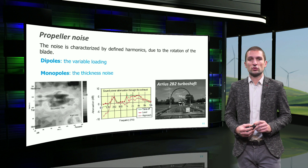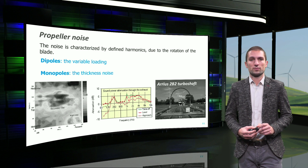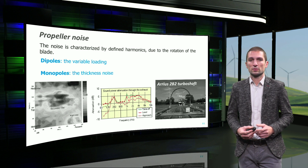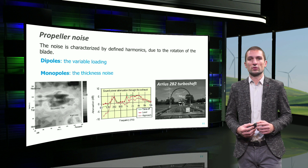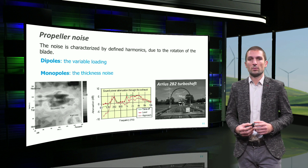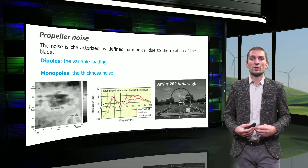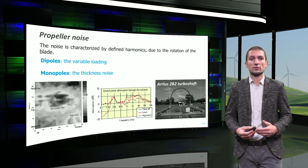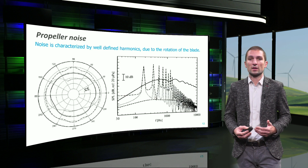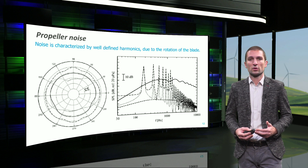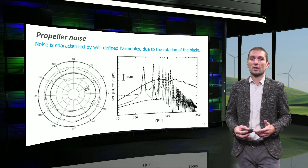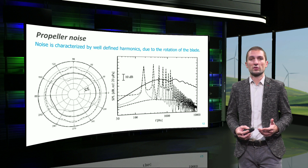Propeller noise is generated by several components. The noise is characterized by fine harmonics due to the rotation of the blade. In particular, the tonal component due to the periodic flow variation induced by the rotating blade force is called loading noise, while the parting effect of the shape through the medium is the reason for another monopole contribution, the thickness noise. The most known component of propeller noise is the tonal one, characterized by consecutive harmonics together with a relatively lower background of broadband contribution. In these graphs, you can appreciate how strong the harmonics are with respect to the lower background.